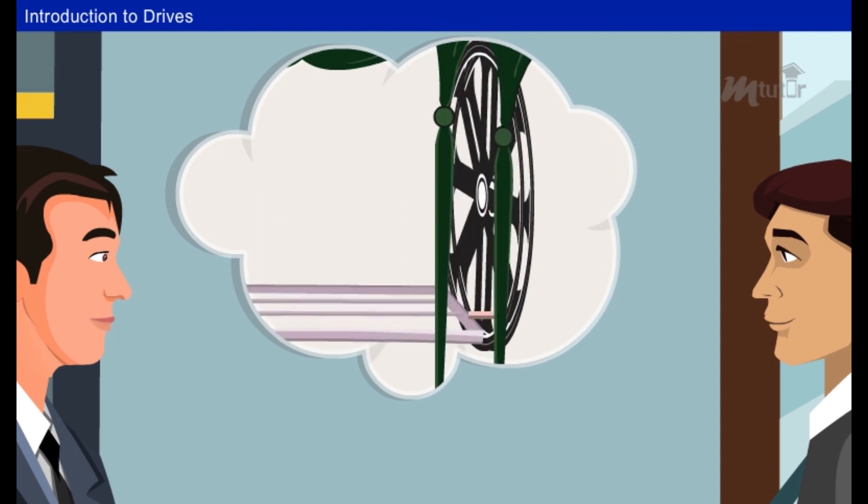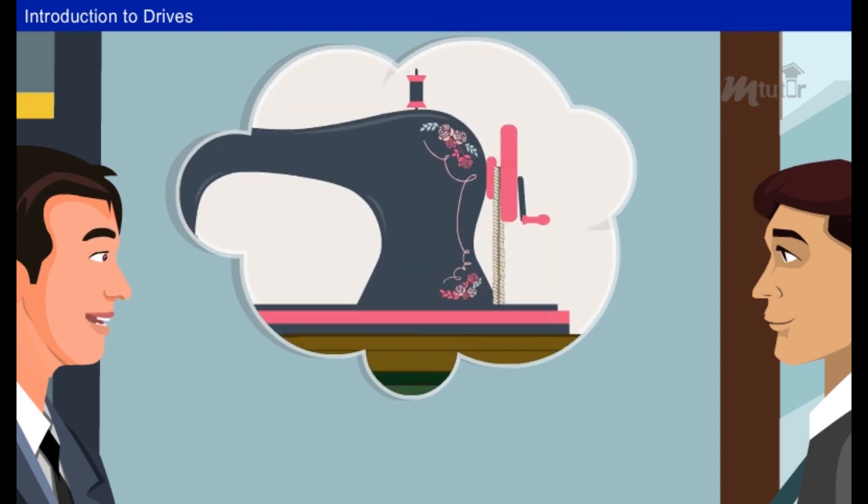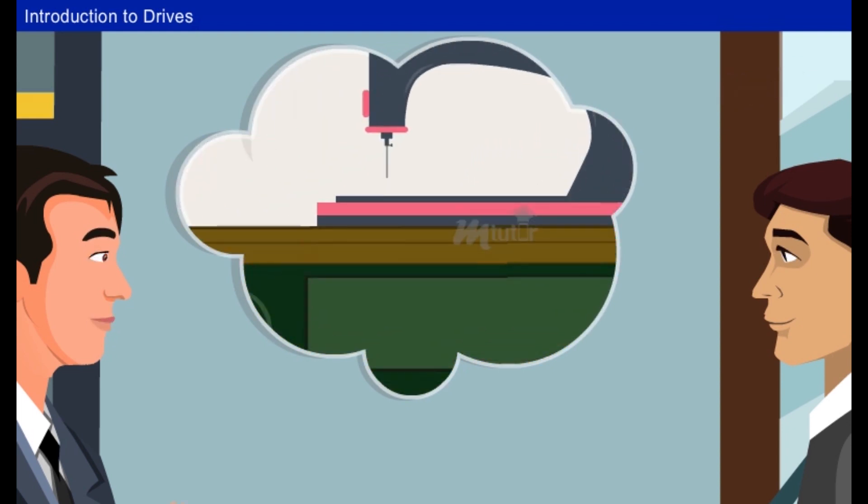For the power transmission from the wheel, that is, rotational motion to the machine, we are using a rope drive. The stitches are made by the threads inserted into the needle, which moves up and down. You can stitch the garment in your desired style.